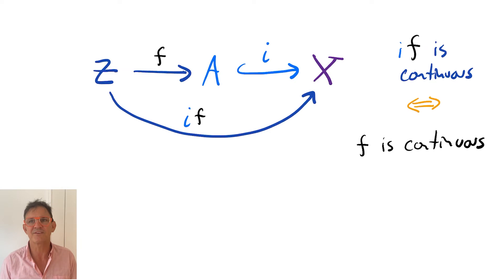Let's take a moment to understand the logic here. We take a space X and a subset A and the natural inclusion of A into X. We can put a topology on A and then ask whether it has the following property.